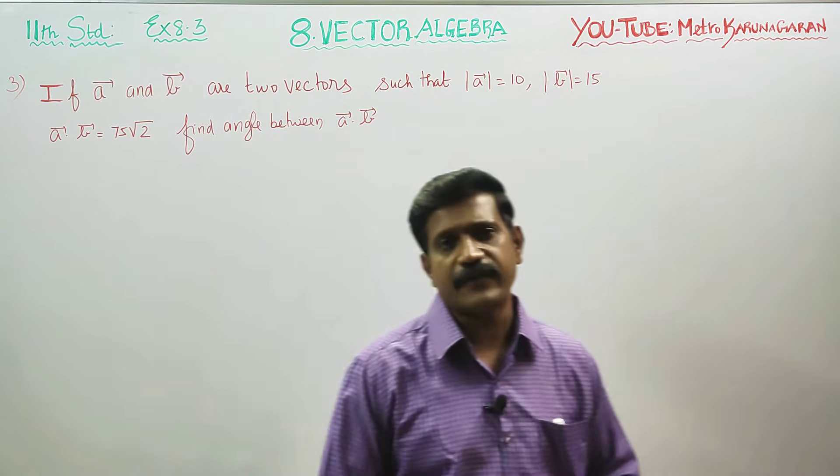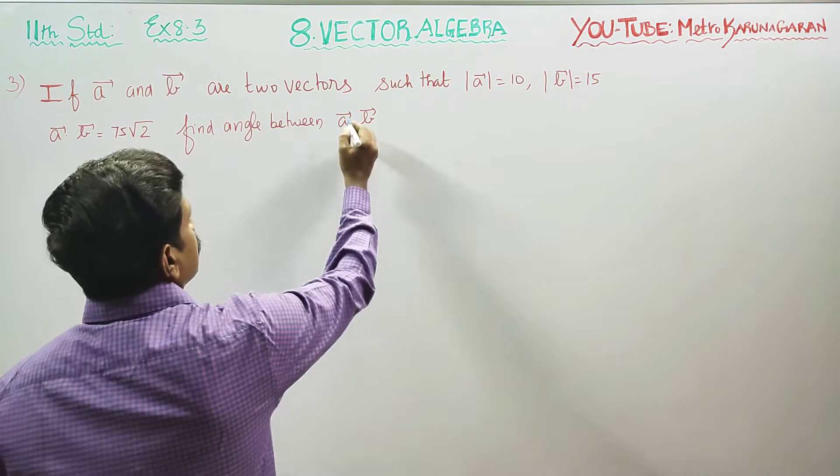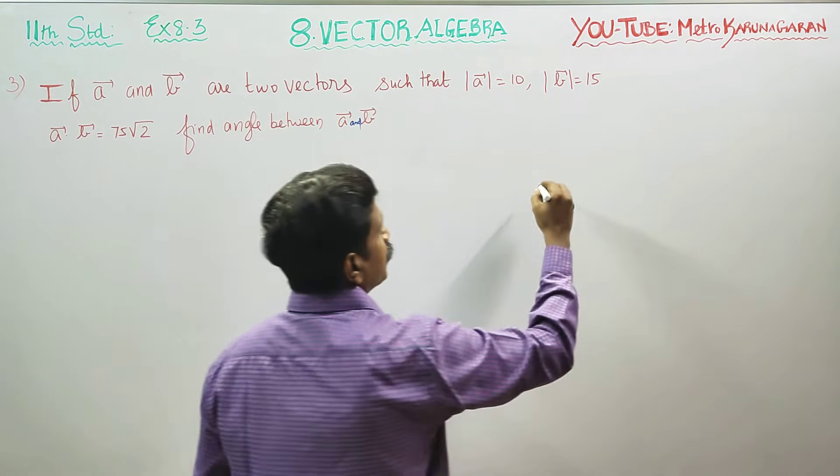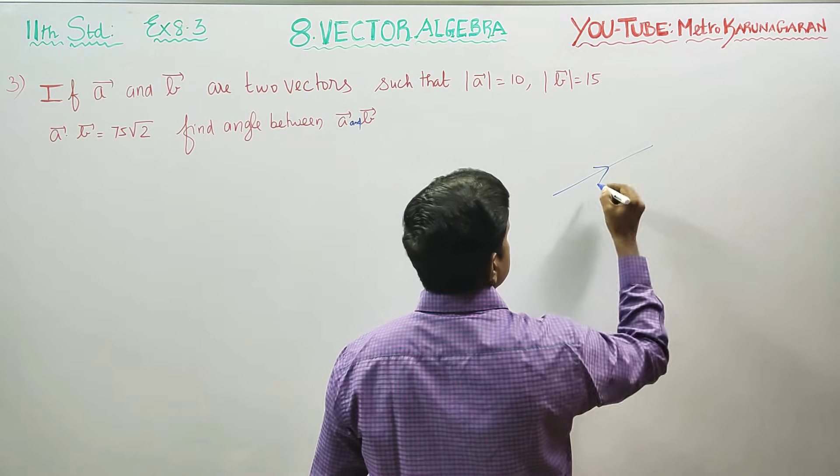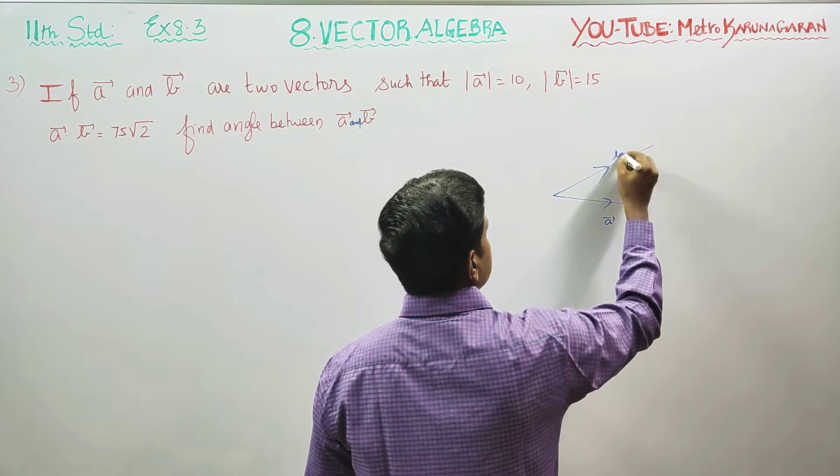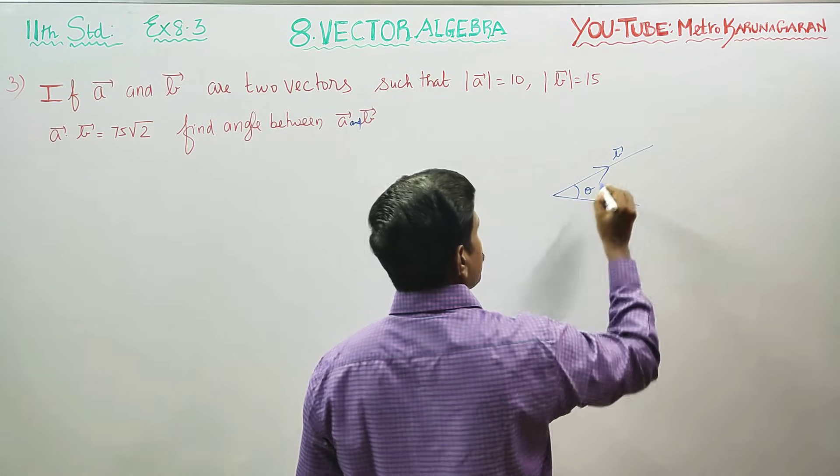find the angle between A vector and B vector. Before solving the problem, this is my A vector and this is my B vector. This is the angle between them.